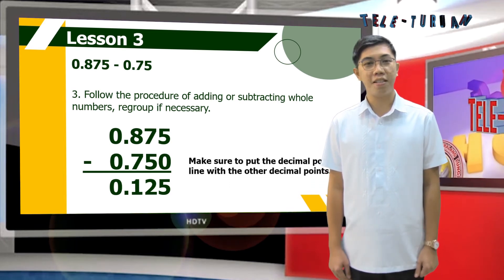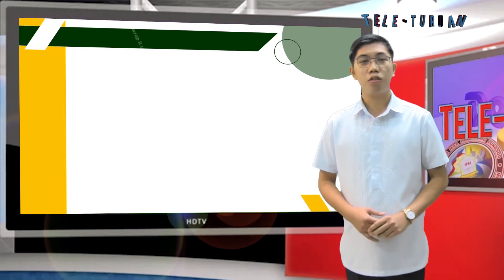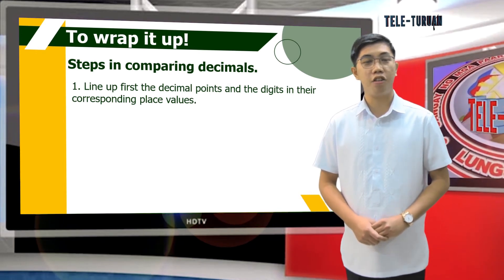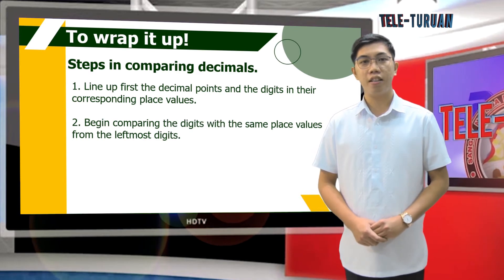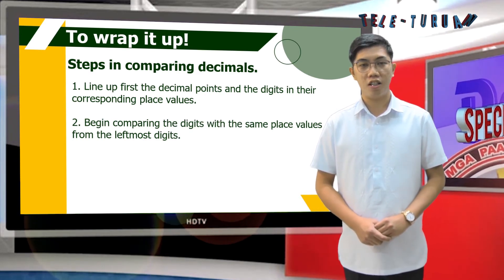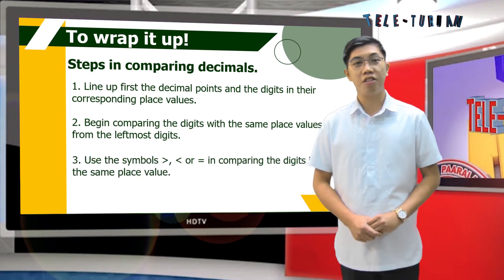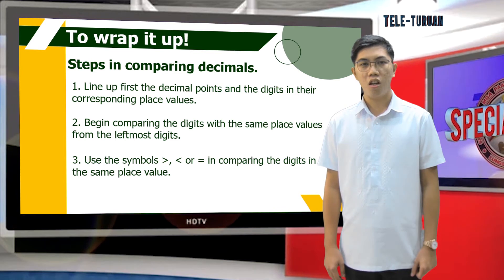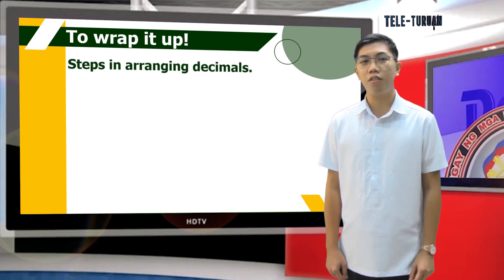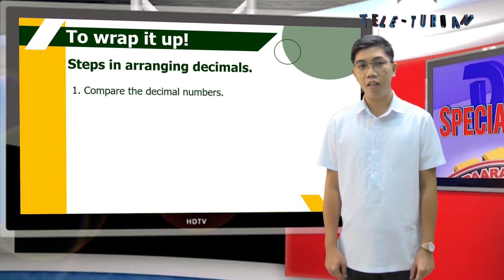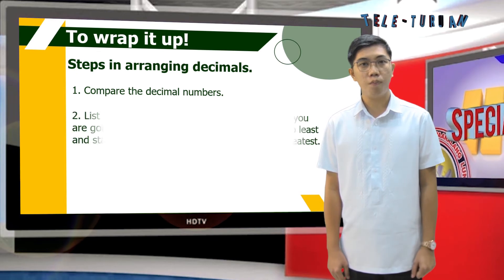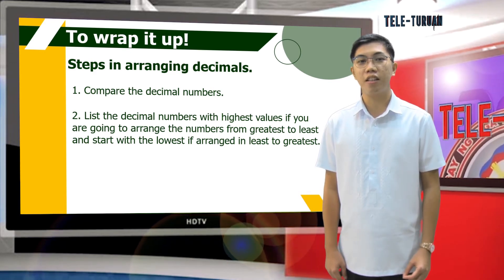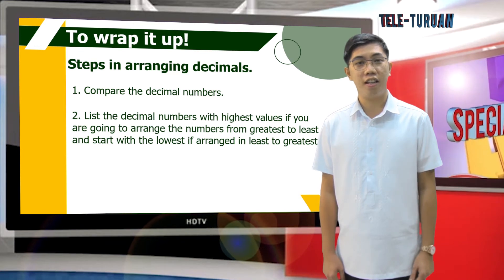Make sure to put the decimal point in line with the other decimal points. To wrap it up, in comparing decimals, line up first the decimal points and the digits in their corresponding place values. Begin comparing the digits with the same place values from the leftmost digits. And use the symbols greater than, less than, or equal to. In arranging numbers, step 1: compare the decimal numbers. Step 2: list the decimal numbers with highest values if arranging from greatest to least, and start with the lowest if arranged from least to greatest.